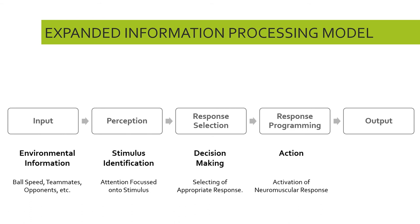Sometimes we refer to this as an effector mechanism. This is the bridge from the thinking process to the doing process — from the cognitive to the physiological. Then the final stage, the output stage, is where we execute that chosen movement: recruiting muscles in particular orders, with particular strengths of contraction and force, in order to actually perform the skill we've selected.